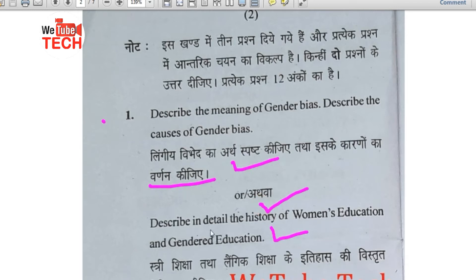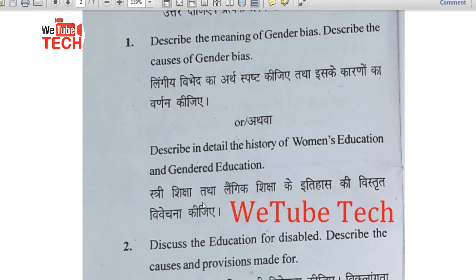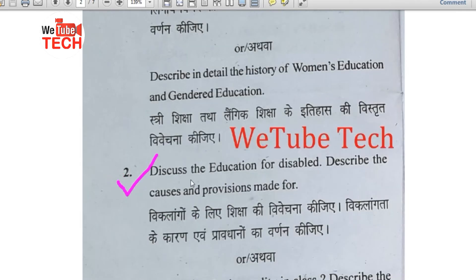The alternate part of question one: Describe in detail the history of women's education and gendered education. Question number two: Discuss the education for disabled. Describe the causes and provisions made for disabled education.